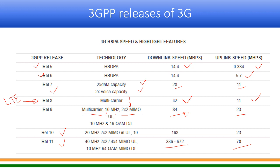It went up to Release 11 using MIMO and higher-order modulation, reaching data rates up to 672 Mbps downlink and 73 Mbps uplink. However, during Release 8, LTE technology was also introduced by 3GPP in parallel. So most operators, instead of evolving further in 3G, migrated to 4G or LTE.